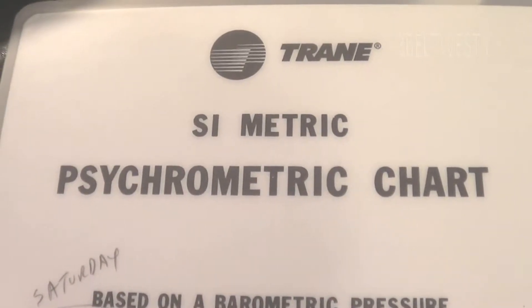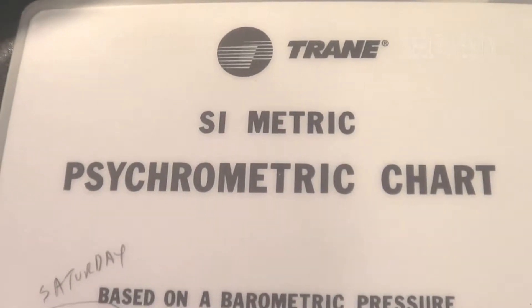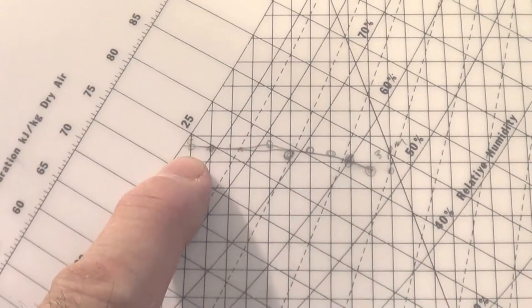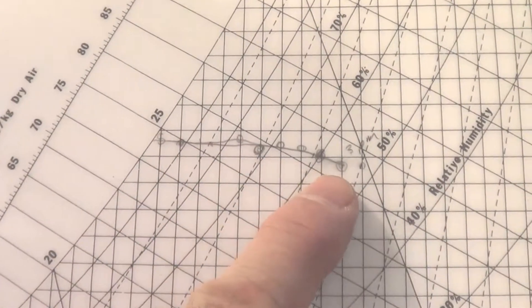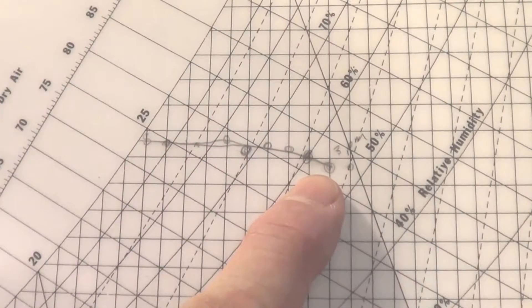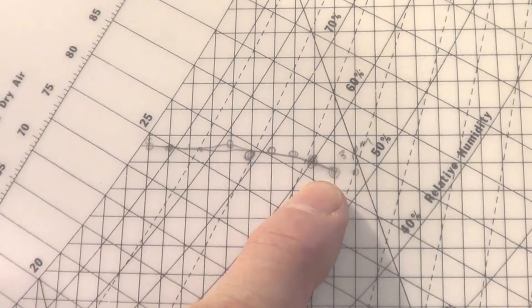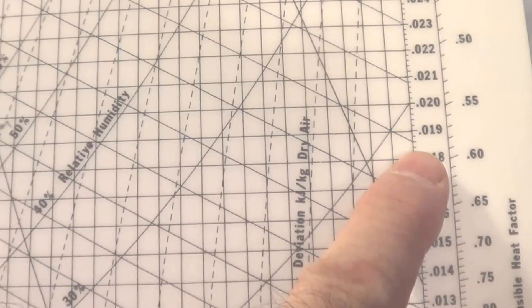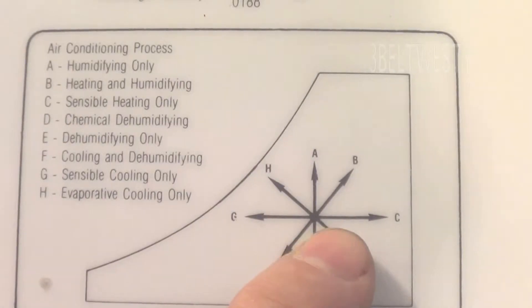This is sensible heating with the metric psychrometric chart case, which during the day outside air heated up and the humidity relative humidity drop with time, but the amount of moisture in the air was roughly constant. That's sensible heating only.